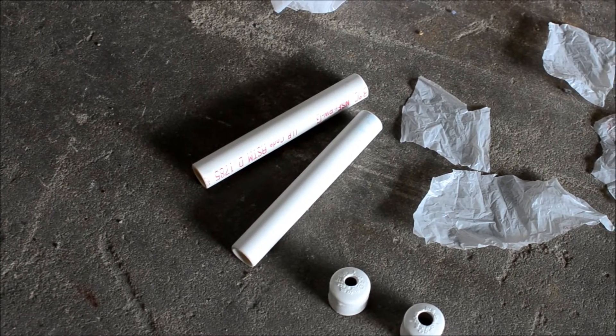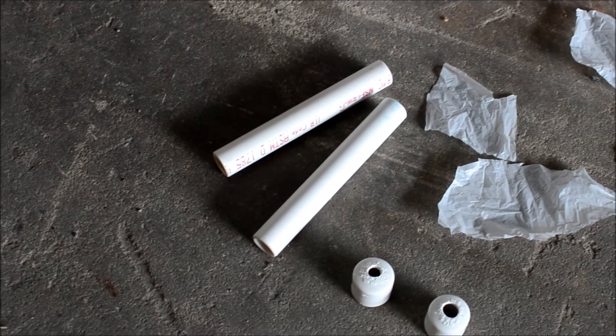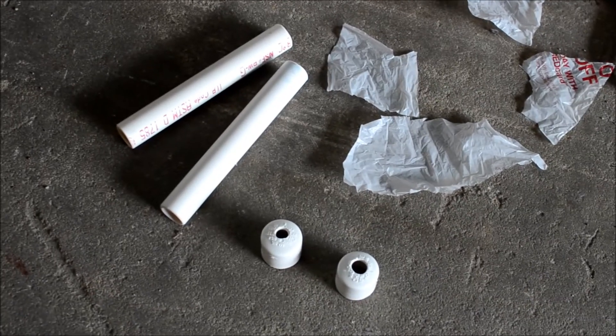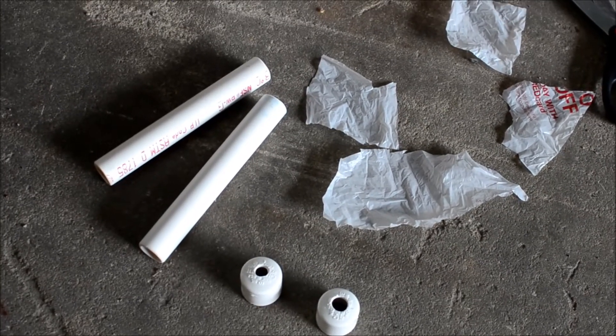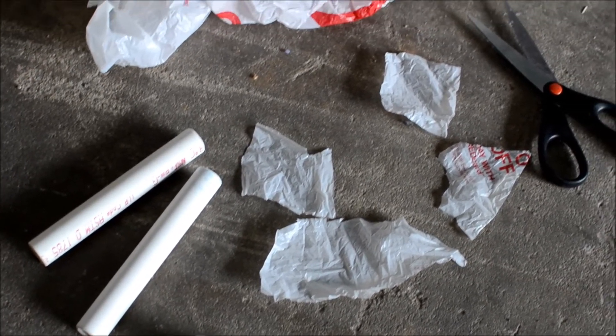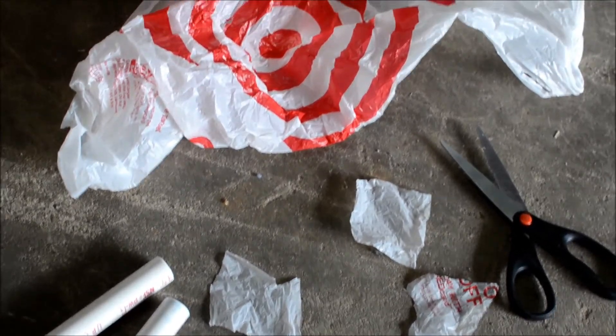The barrels of the blood cannon are just a small length of PVC pipe. The nozzles are an end cap with a hole drilled in it. Each end is sealed with a piece of plastic that's cut from a basic plastic shopping bag.